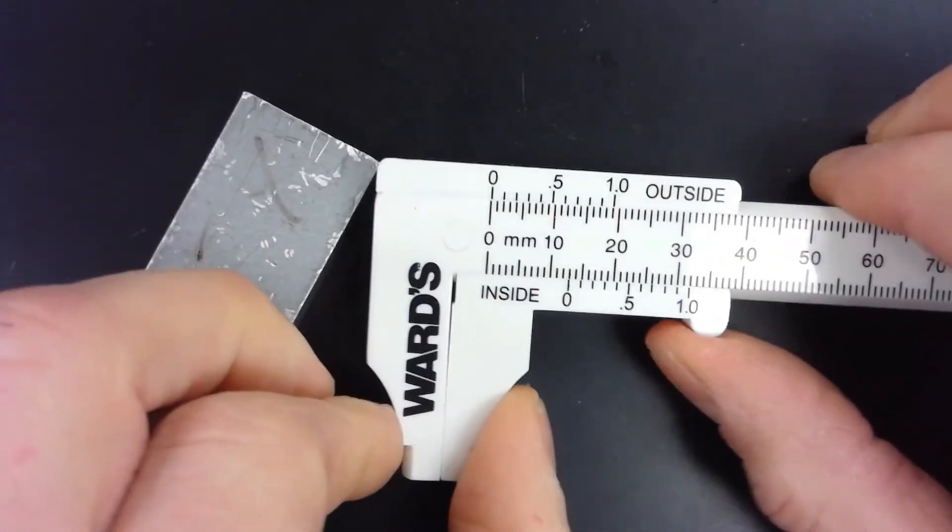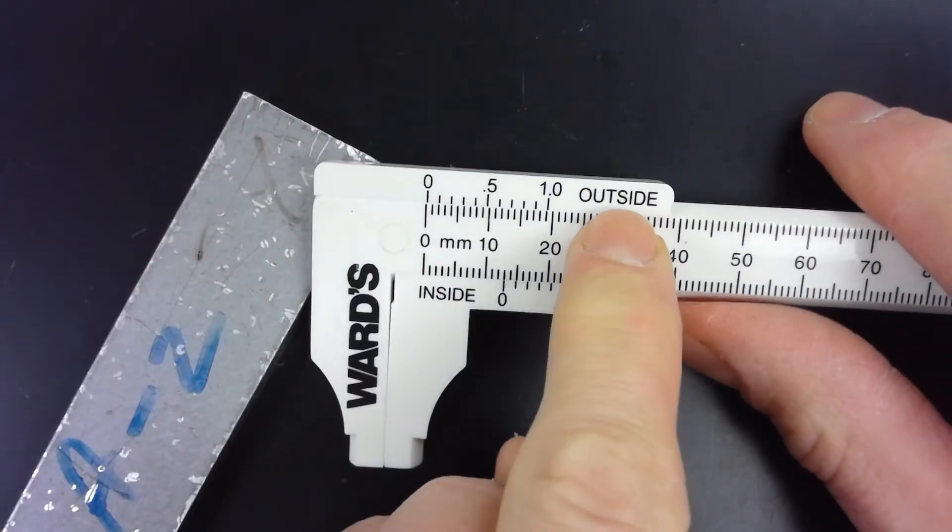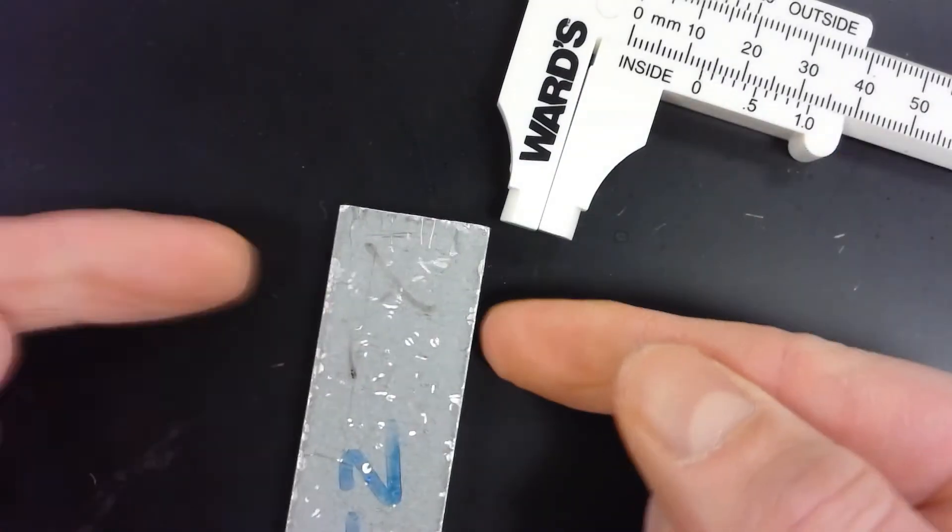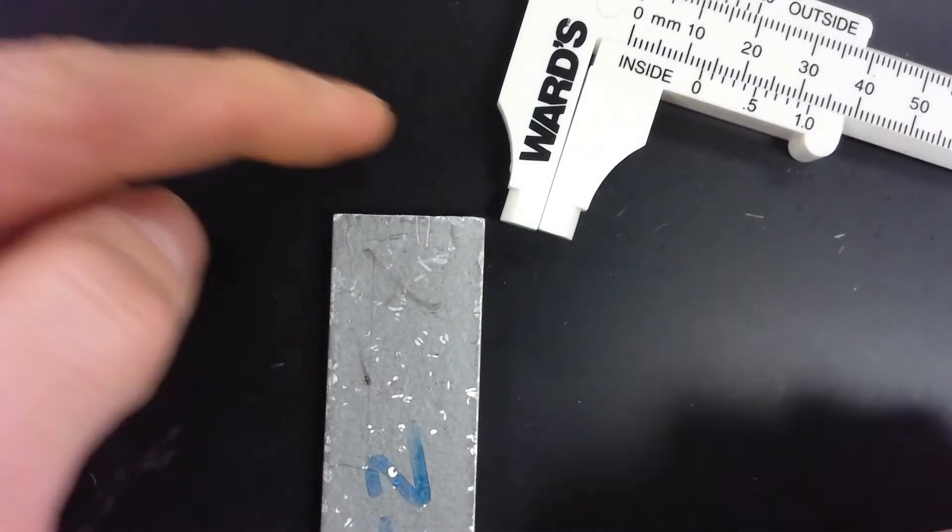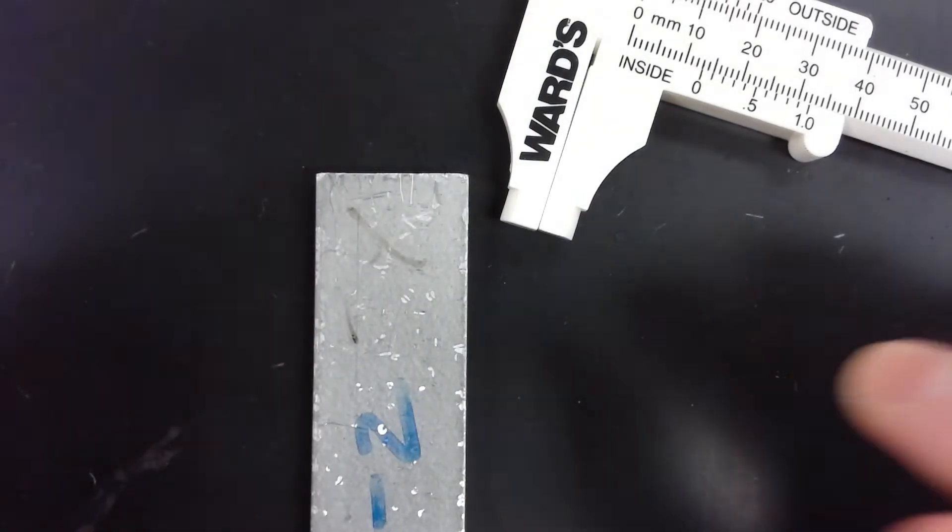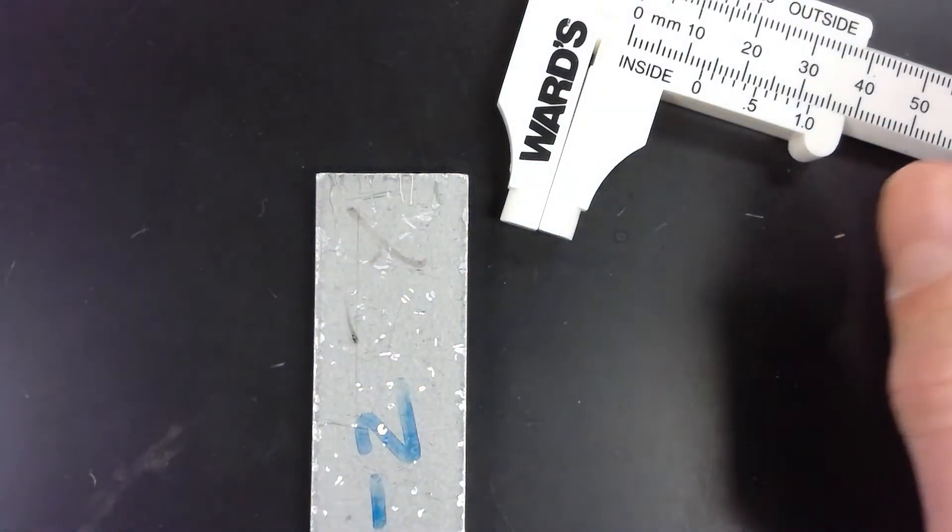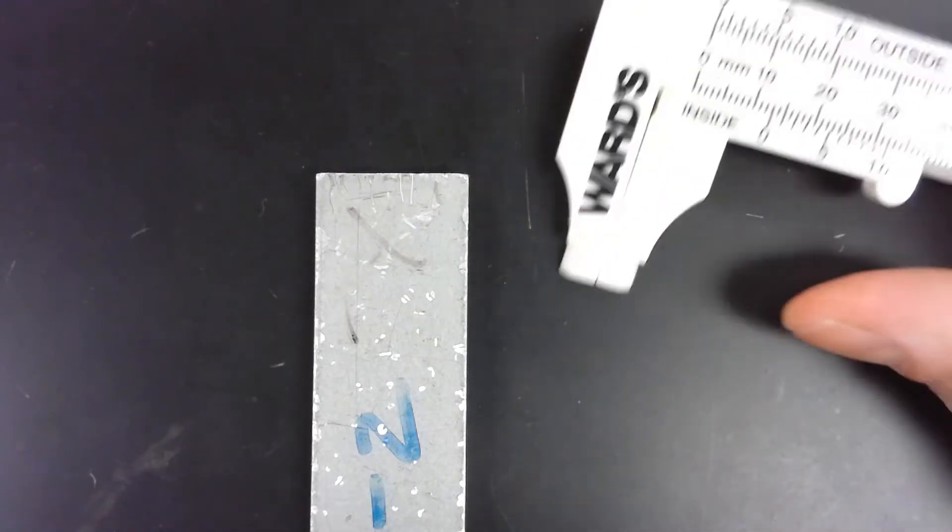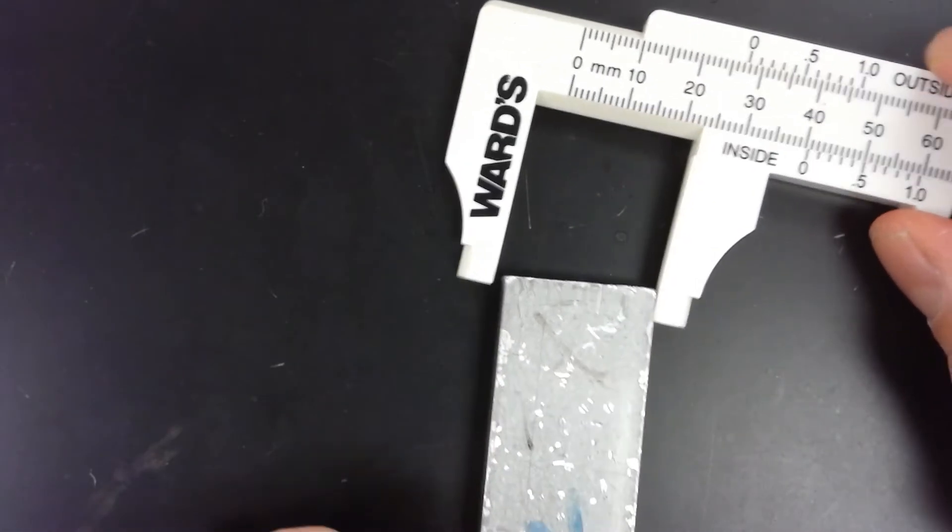So the caliper slides, it's got two scales—an outside scale and an inside scale. We're measuring the outside dimensions. Inside would be if we were measuring inside of a pipe or a tube. That's not occurring, so we're only going to use the outside scale.